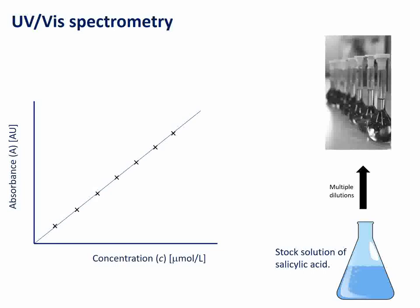You could do this with graph paper — it would be good practice, in fact — and then simply read across from the absorbance value to get the concentration. So if you have an absorbance reading from your aspirin breakdown experiment in arbitrary units, you can read across from the arbitrary units on the y-axis over to the line, then down, and that tells you the concentration of salicylic acid in that sample.